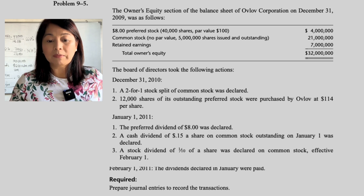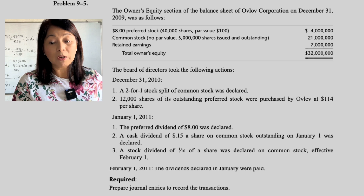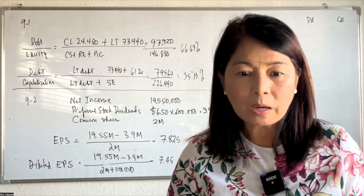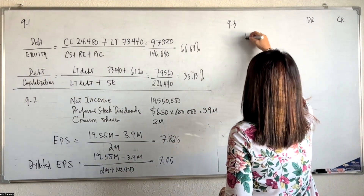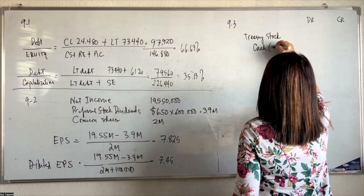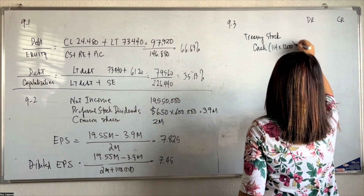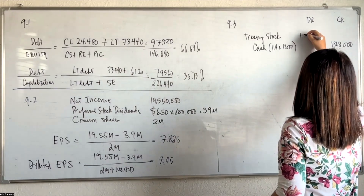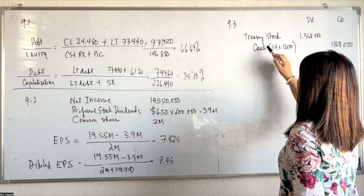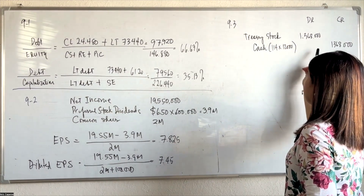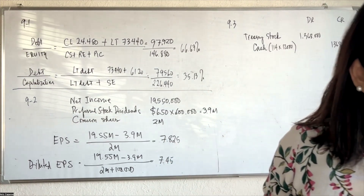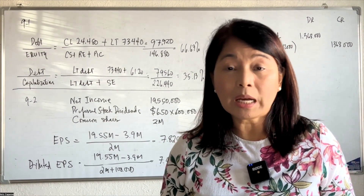Then 12,000 shares of outstanding preferred stock were purchased by Oblog at $114 per share, taking them back into treasury. To record this buyback: we debit treasury stock. The cash given out is $114 times 12,000 shares, which is $1,368,000. Treasury stock is a contra equity account — it reduces equity. There is no gain or loss recognized; we record treasury stock at the cost we purchased it.